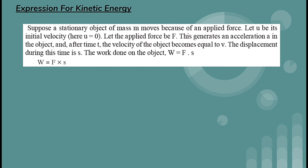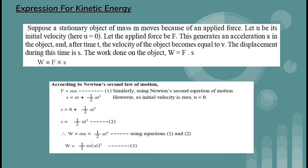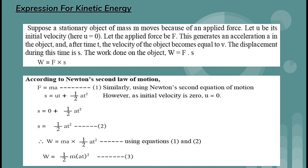Let u be its initial velocity, where u = 0. The applied force F generates an acceleration a in the object, and after time t the velocity becomes v. The displacement during this time is s. The work done on the object is W = F × s. According to Newton's second law, F = ma.